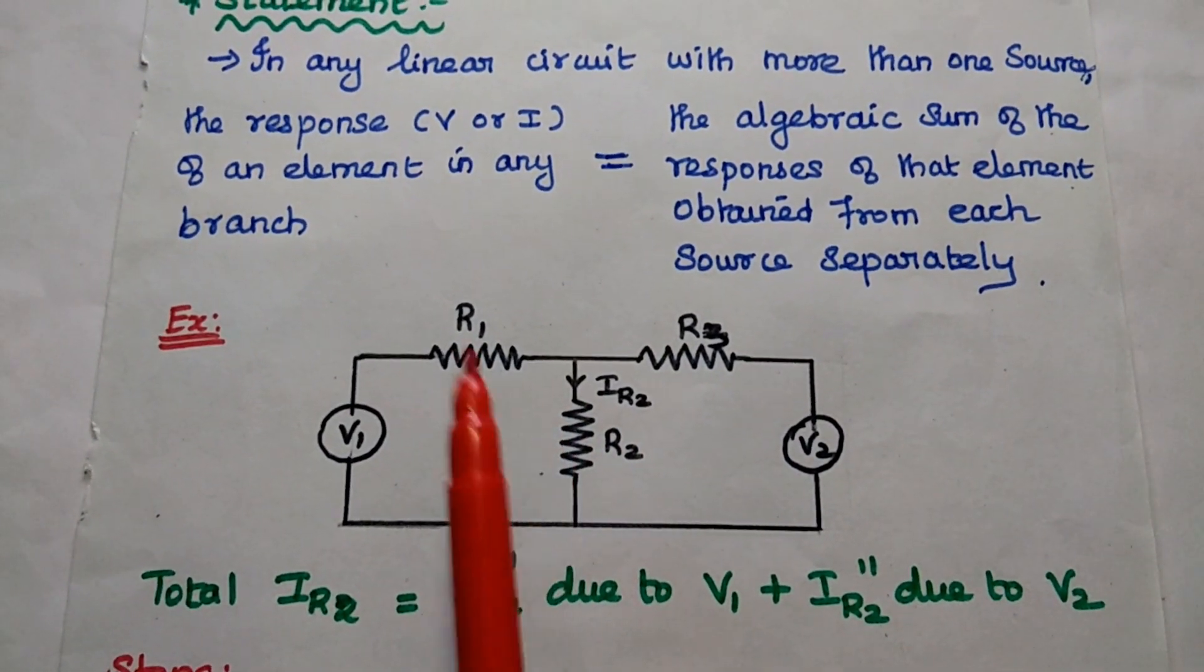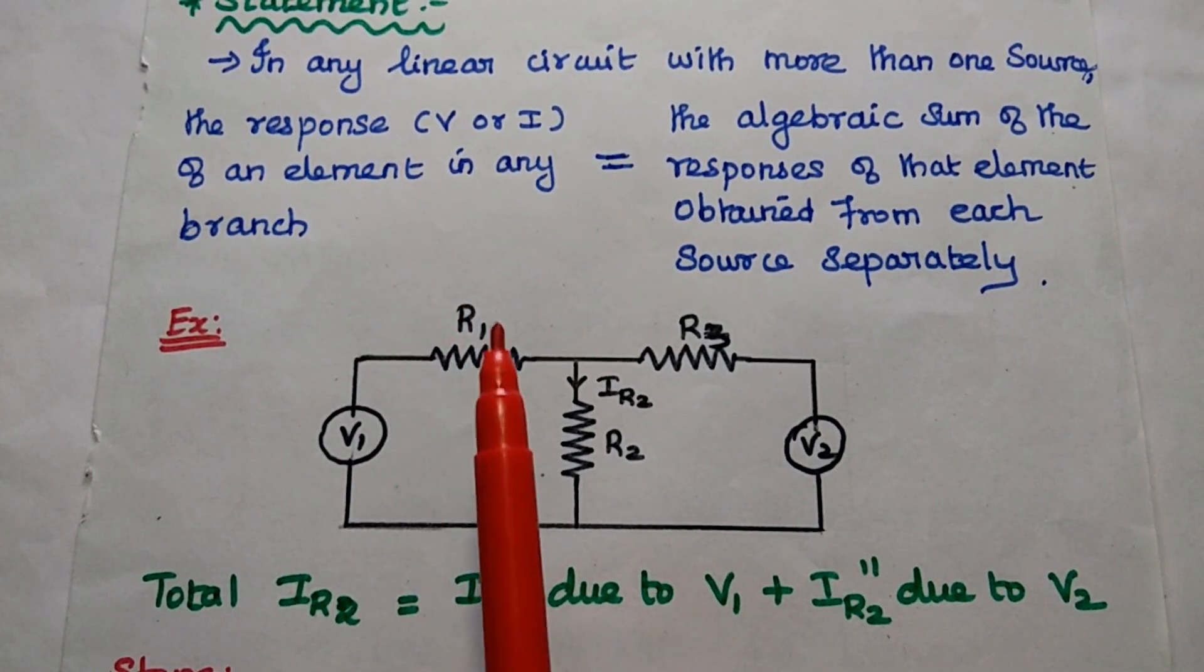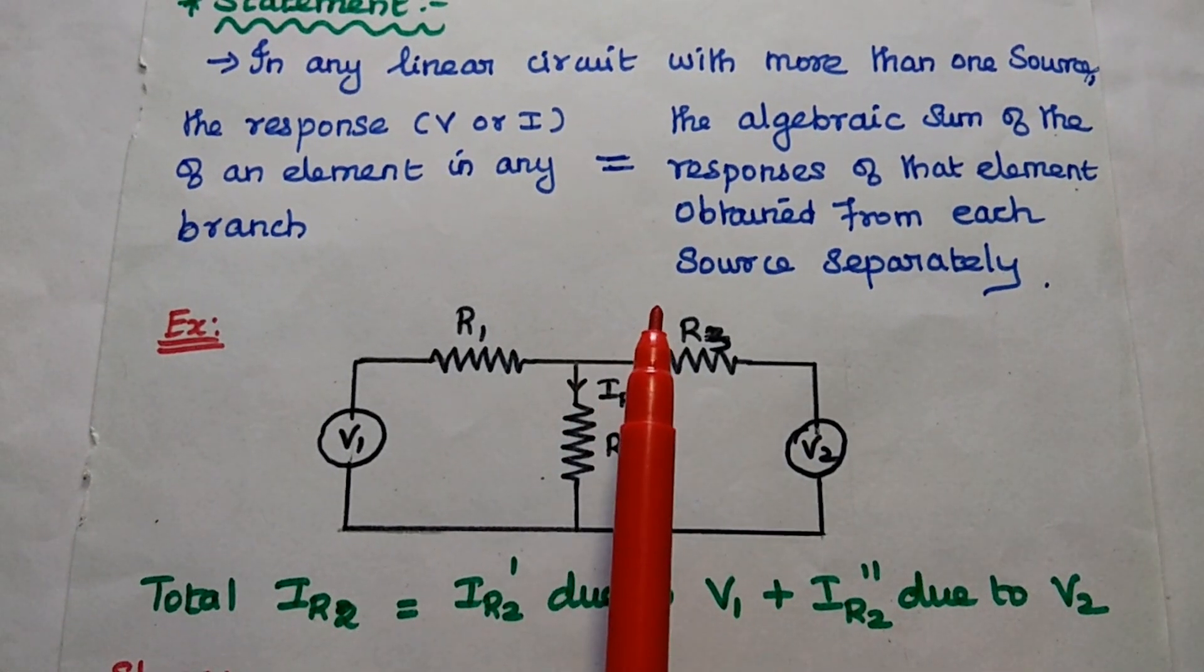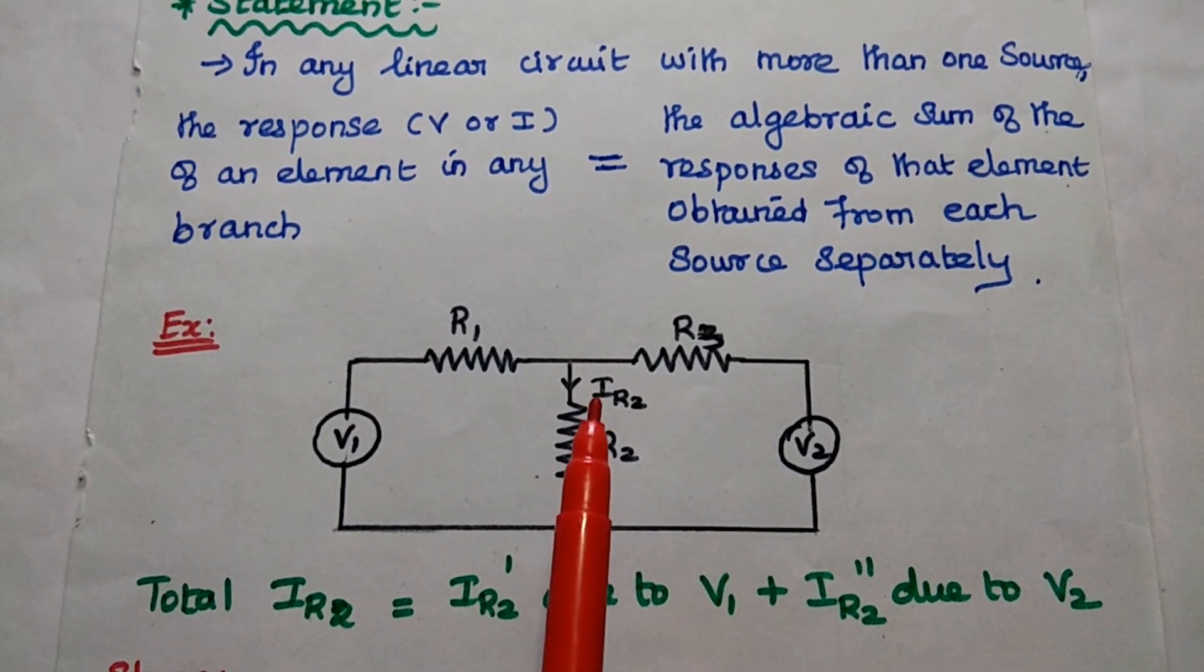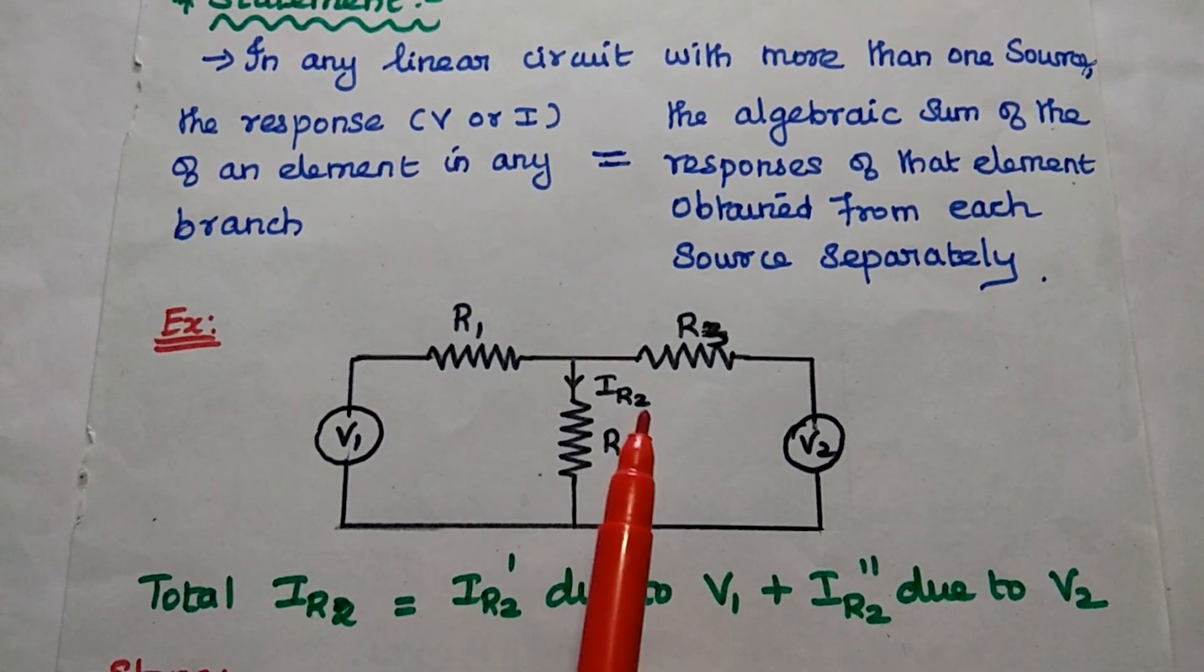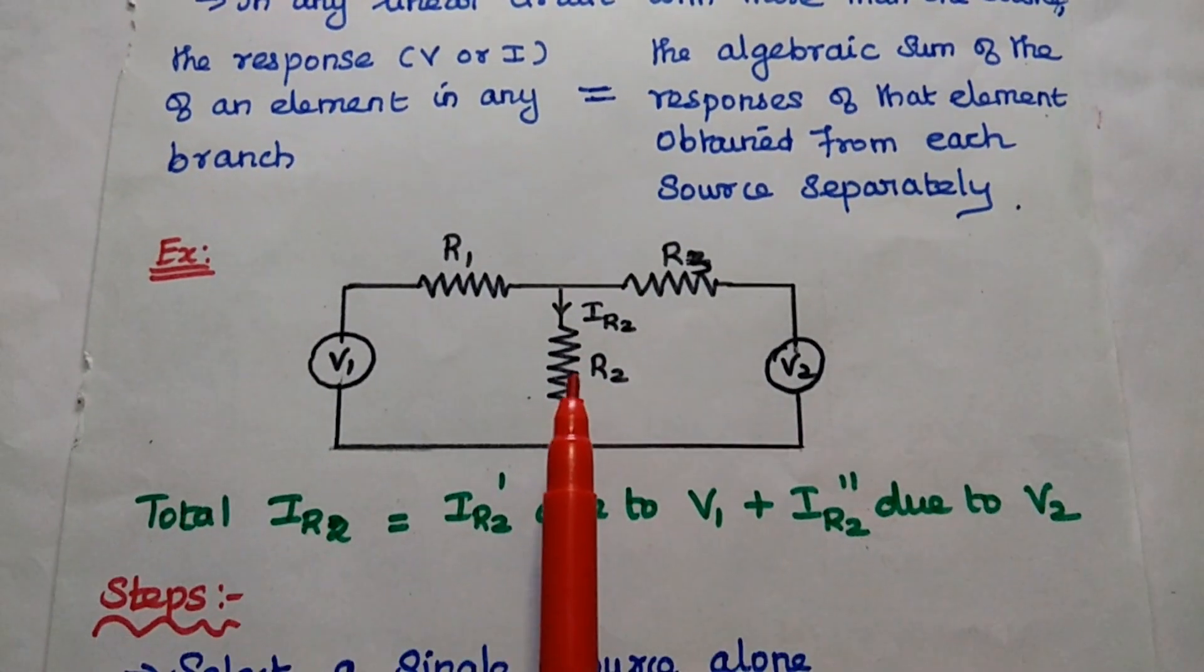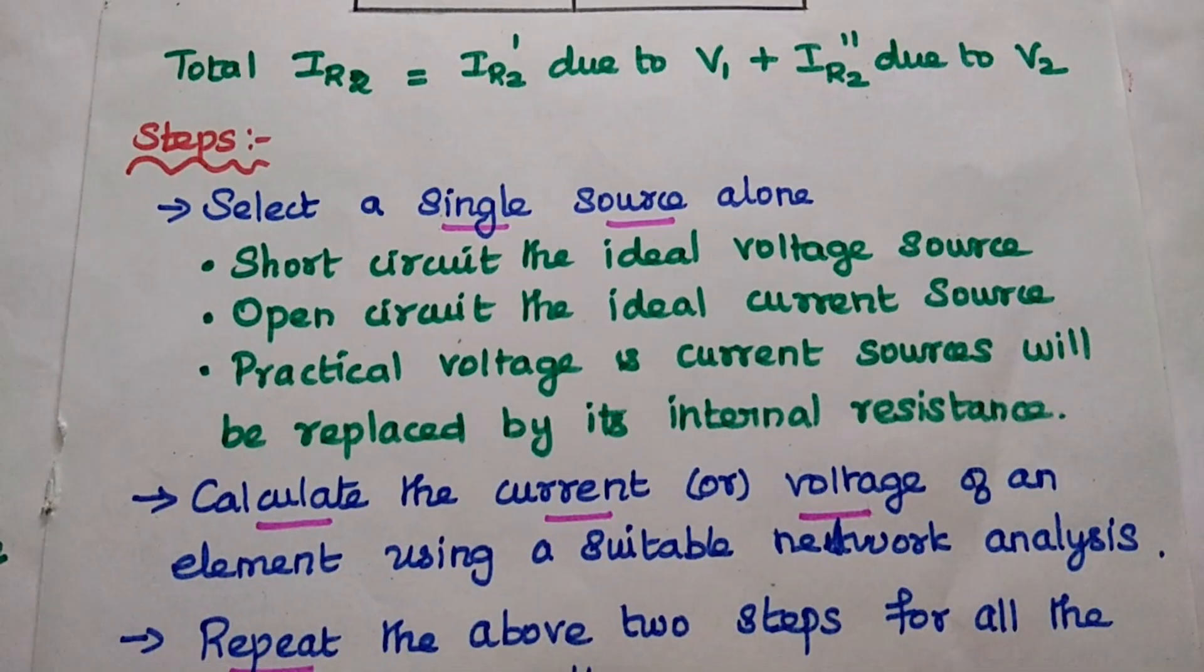Do you all understand this concept? So the response of an element in any branch of the complex circuit with more than one source is equal to the algebraic sum of the responses of that element obtained from each source separately. So next, we are going to discuss the steps used in this superposition theorem.